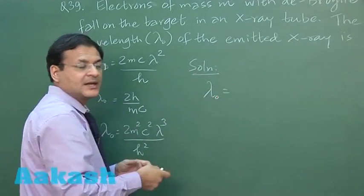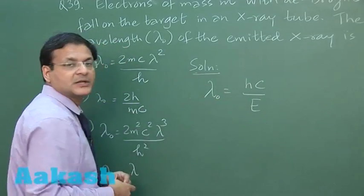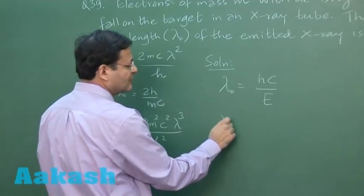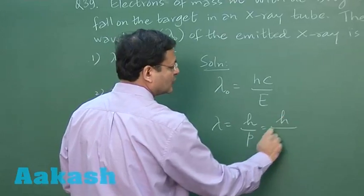This is simply the energy equation, hc by energy. So this is equal to the cutoff wavelength. And what is de Broglie wavelength? De Broglie wavelength lambda is h by p, so you can also write it h by under root 2 m e.